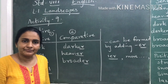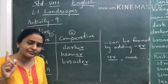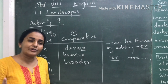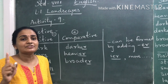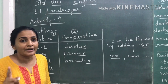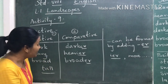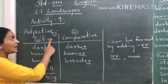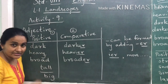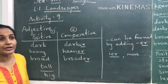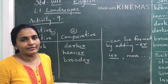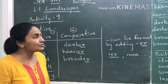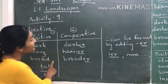Another example: 'Mumbai is a big city.' We are talking only about Mumbai and saying it is a big city. So 'big' is an adjective in the positive degree. When we talk only about one thing or one person, we use the positive degree.